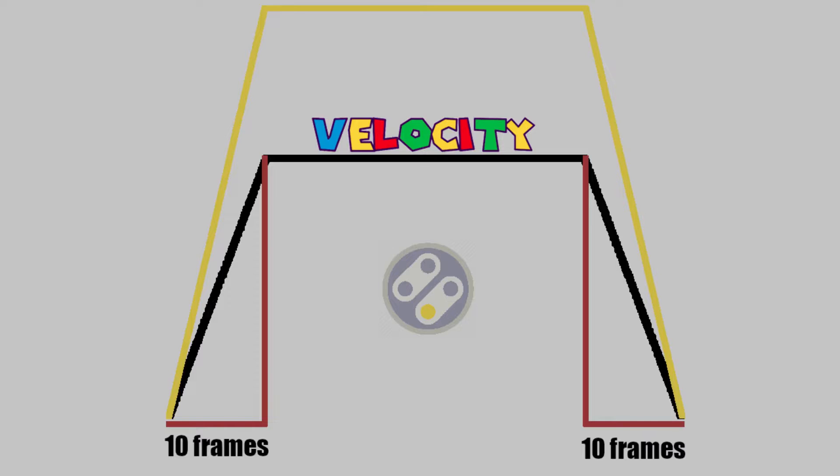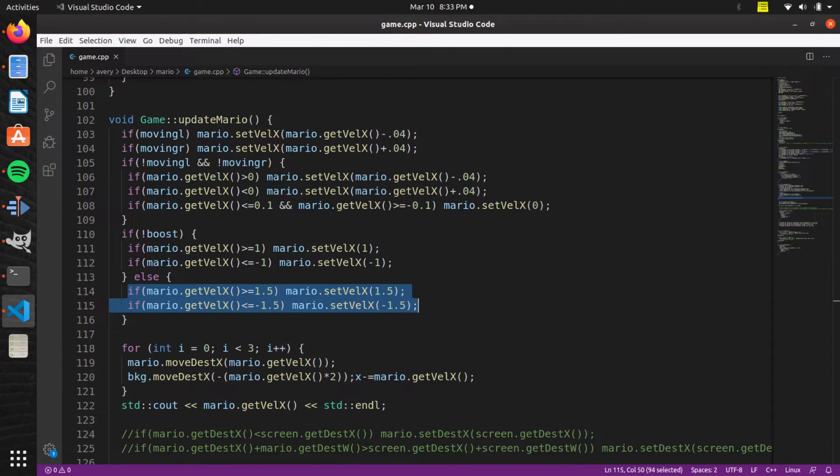Now there's one extra thing. This is in the Mario games where you can hold down the B button. As you hold the B button it makes it so you can run even faster. So we're making it so his max speed is even higher.